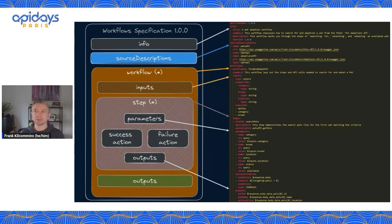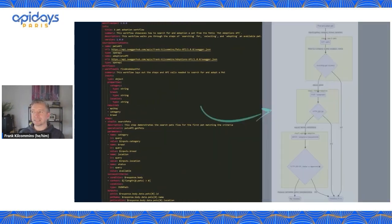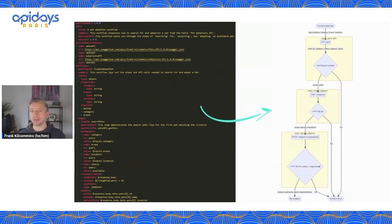We can use the Workflows Specification to describe all of those steps and how to interact with the different endpoints in our Pets API or Adoptions API very explicitly, so there's no ambiguity for consumers in third-party ecosystems. Here we're showing what parts of the workflow specification look like in YAML. The beauty of YAML being a machine-readable format is that we can rely on tooling to tell the story better — consumers can get a living graphical representation of the workflow, and if anything changes on the left, the diagram on the right updates. It becomes living documentation and it's assertable.